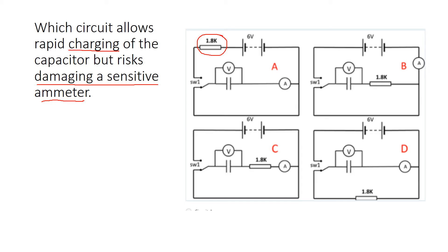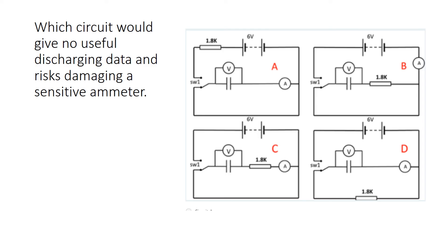We already know circuit A has a resistor in the charging process, so it can't be A. Circuit B also has a resistor when the switch is in the top position, so that can't be right either. Circuit C was correct in the last question for having suitable charging and discharging through a resistor, so it can't be C. It must be D. Let's double-check: in the discharging part there is a resistor, but when connecting for charging via the two cells, we have the ammeter in series with the capacitor but no protective resistor. So D is the correct answer — the ammeter risks being damaged.